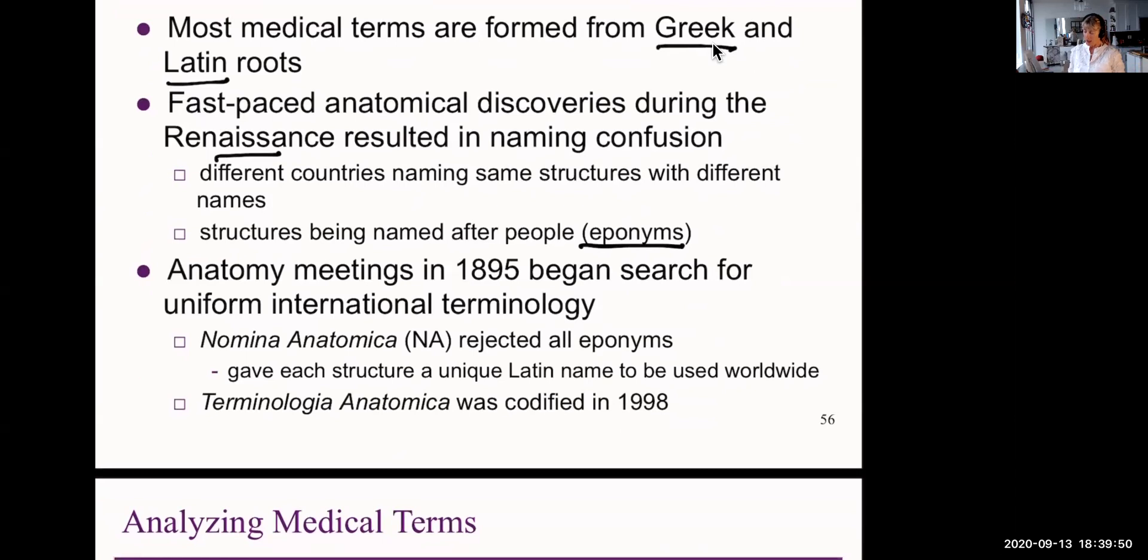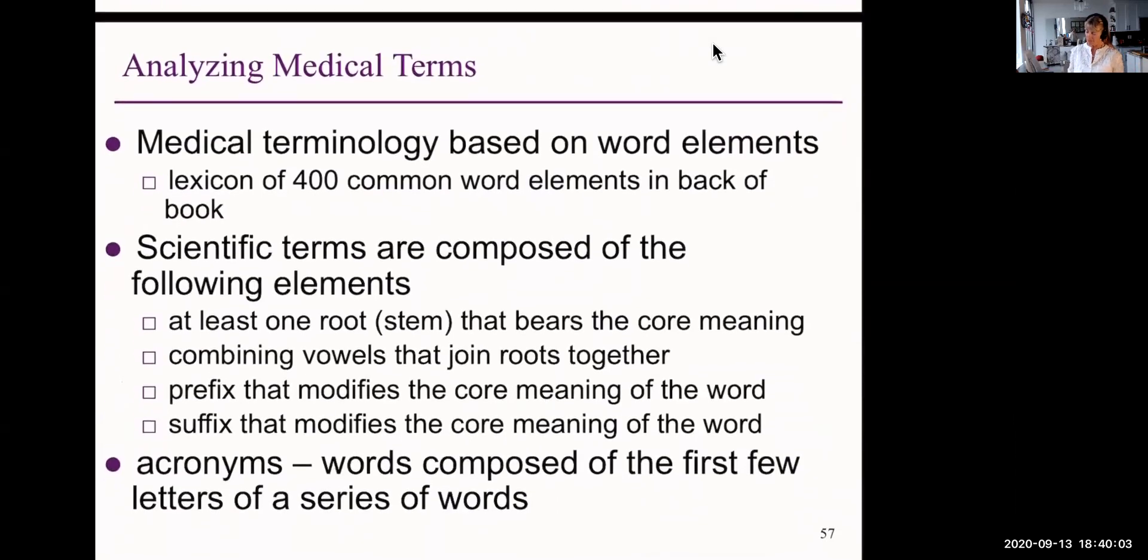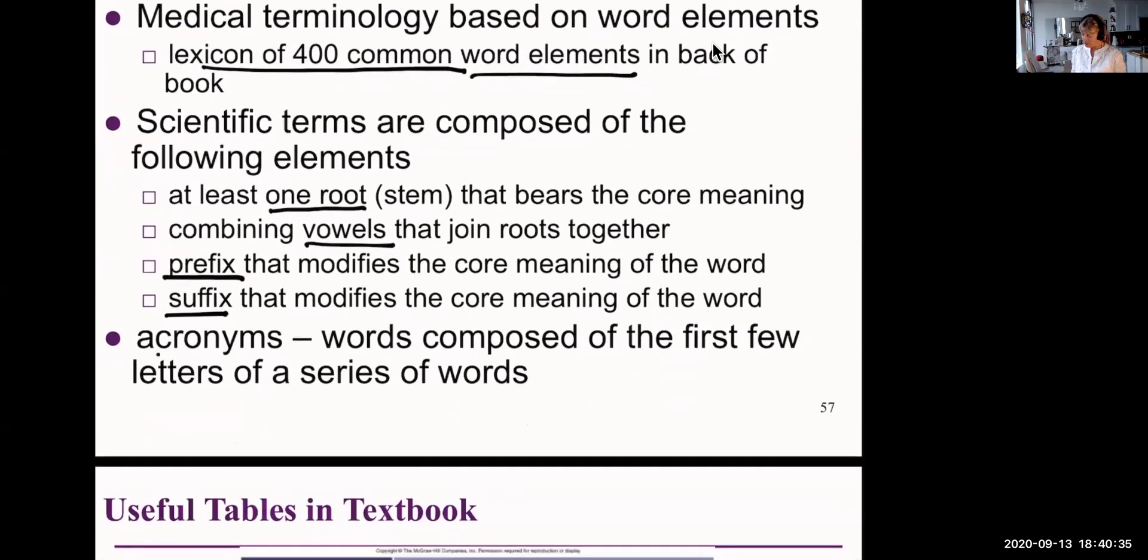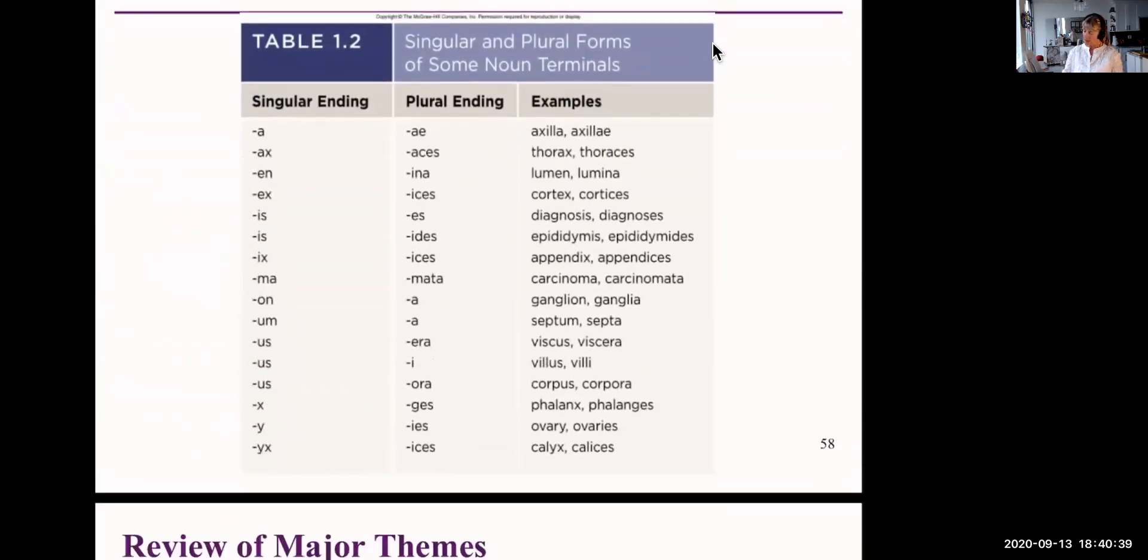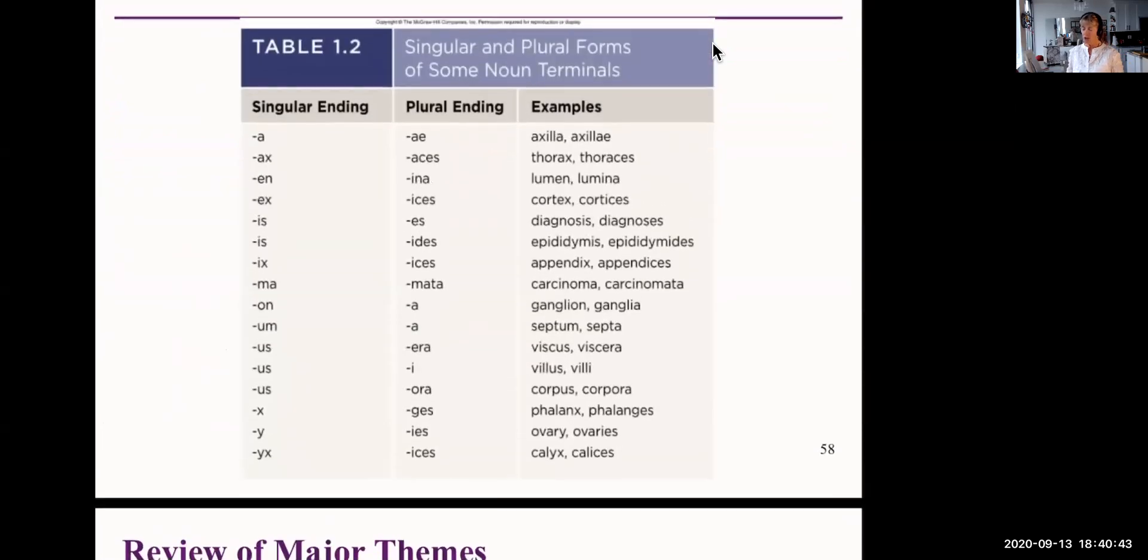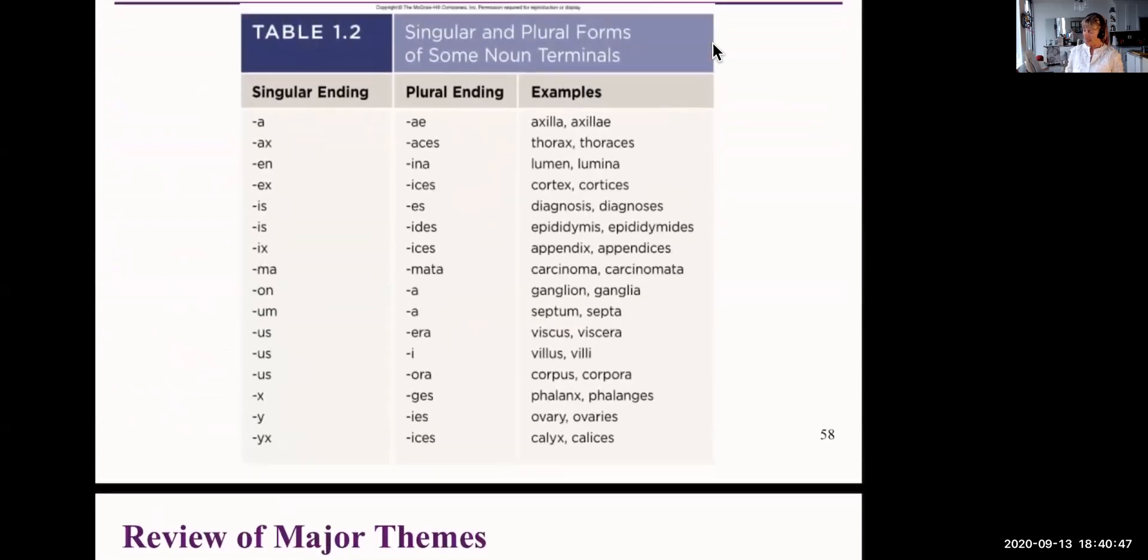So there are books, and the Nomina Anatomica, for example, rejects all eponyms. Unique Latin names are given to anatomical structures. What I would encourage you to do is, in the copy of your textbook, there's a lexicon of 400 common word elements in the back. You should become familiar with that. I'm not going to go over it now. It would take a long time, but keep in mind that there is generally a root. Vowels join roots together. Become familiar with prefixes and suffixes and acronyms. So there's useful tables in the textbook. Single and plural forms, for example. I encourage you to look into anatomical terms.